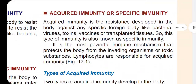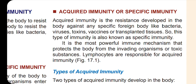Next is acquired immunity. Acquired means — looking at the meaning of the word — this is specific immunity. We are talking about the pathogen against acquired immunity. This is a very powerful immune mechanism. The pathogen is in our body and this is a very powerful immune mechanism. Comparing innate and acquired, the acquired immunity is very powerful.